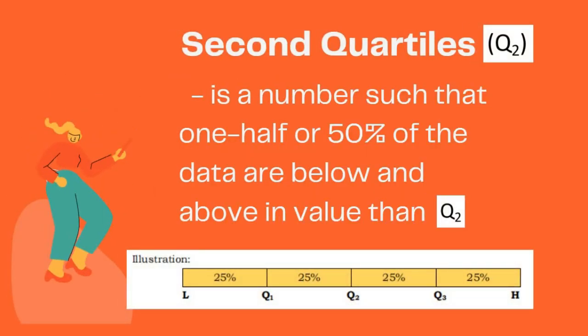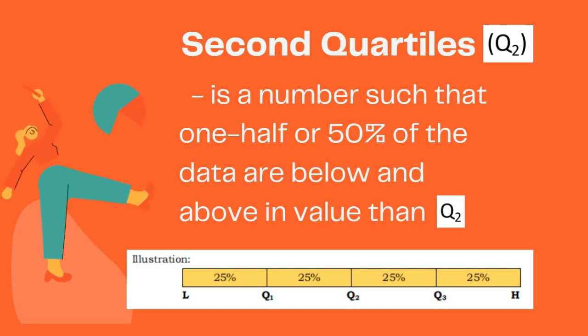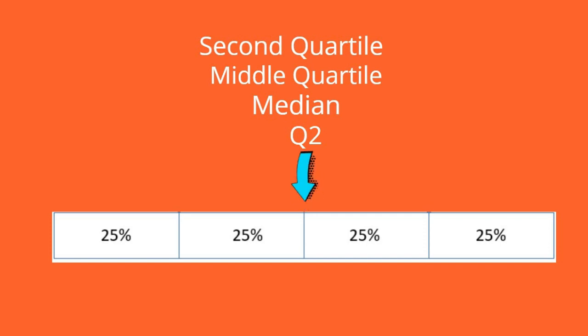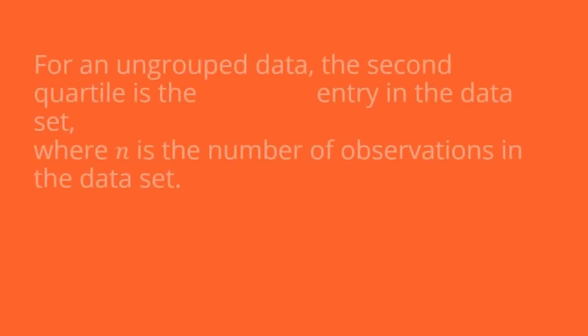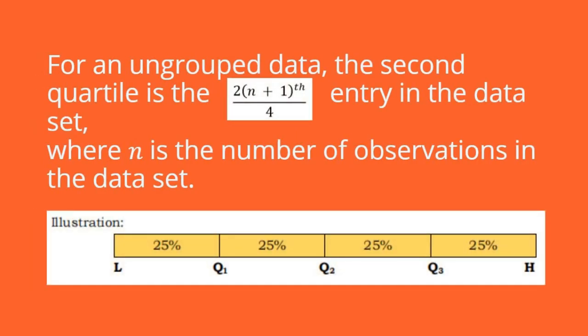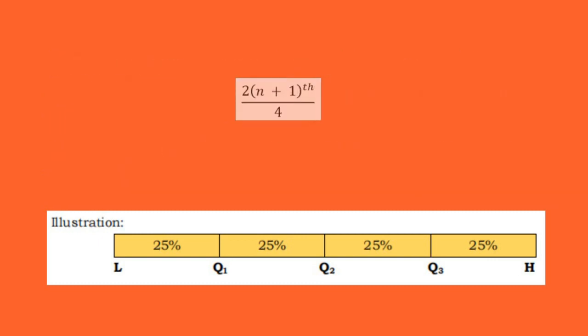Now let's proceed to the second quartile. The second quartile is a number such that one half or 50% of the data are below and above in value than Q2. The other term for second quartile is the middle quartile, which is also the median. To find the location of Q2 for ungrouped data, use the formula: 2 times (n + 1) / 4, where n is the number of observations.